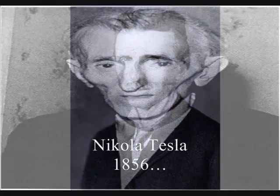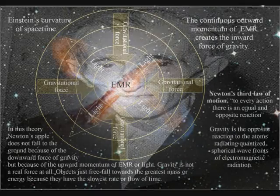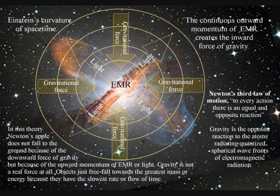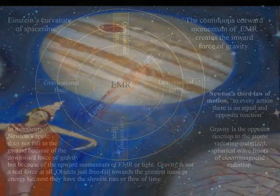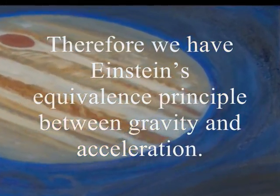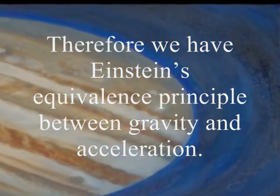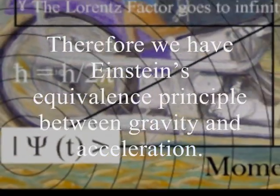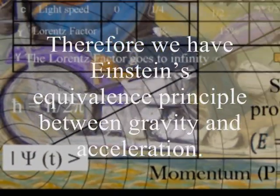In this theory, gravity is a secondary force to the electromagnetic force. Objects just free-fall towards the greatest mass or energy because it has the slowest rate that time flows.